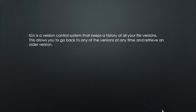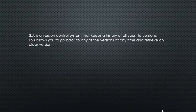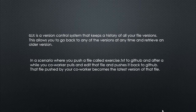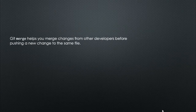First of all, we need to know what Git is. Git is a version control system that keeps a history of all your files. This allows you to go back to any version at any time and retrieve an older version. In a scenario where you push a file called exercise.txt to GitHub, after a while your colleague or co-worker pulls and edits that file and pushes it back to GitHub — that file automatically takes a new version.